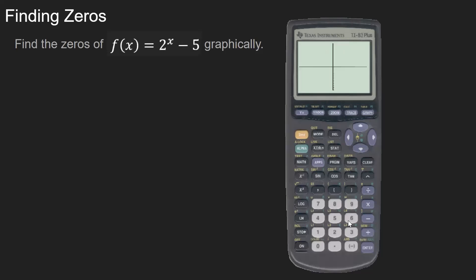I'm going to hit zoom 6. And remember, a zero is where the graph crosses the x axis. And this graph makes sense because it's the graph of 2 to the x shifted down 5 units. So if we checked it, this horizontal asymptote here would be at negative 5.